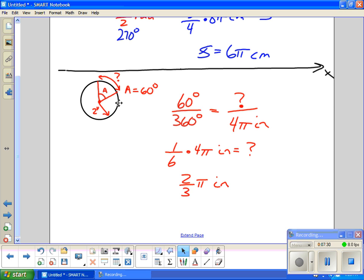It always works as proportions. Calculate the ratio of the angles and make it equal to the ratio of the arcs.